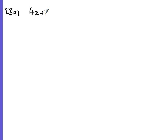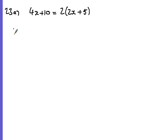Question 23: factorize the following. Factorizing means putting the brackets back in. What number goes into both terms? 2 — so 2 times what gives 4x? That's 2x. And 2 times what gives 10? That's 5. So the answer is 2(2x + 5).